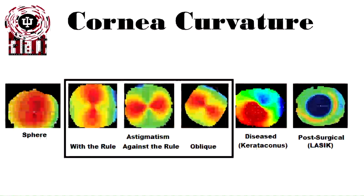Let's look at some corneal topographies to get a better idea of that. Corneal topographies essentially look at heat maps to examine the curvature of the eye. On the right, we have a spherical cornea where the entire cornea is relatively equally curved in all meridians. We could have with-the-rule astigmatism, where there's more curvature in the vertical meridian, or against-the-rule astigmatism, where there's more curvature in the horizontal meridian, or oblique astigmatism at angles like 140, 35, or 45 degrees. We could also have diseased corneas causing irregular astigmatism — for example, keratoconus, which causes a change in curvature inferiorly compared to superiorly, producing high levels of ocular aberrations. We could also have a post-surgical LASIK patient who has had their cornea flattened to correct myopia.